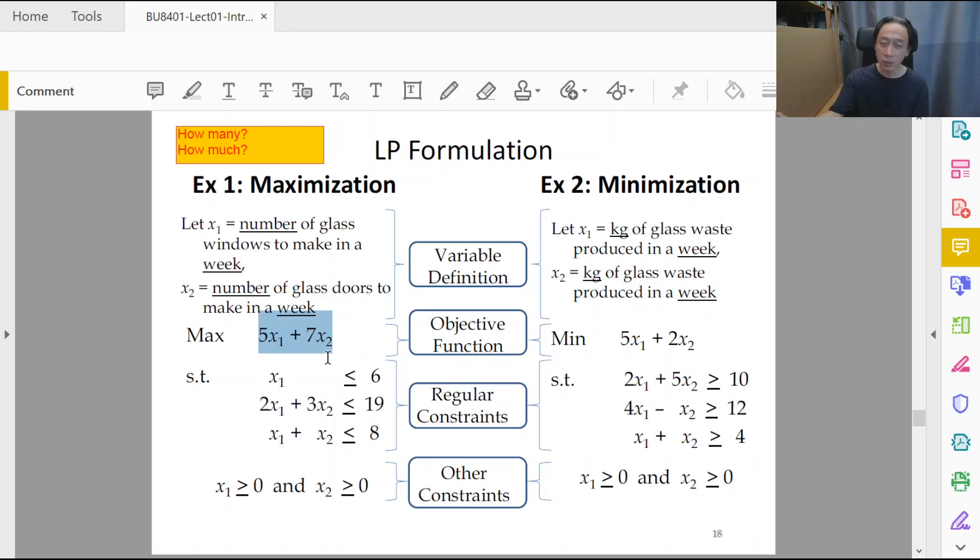We talked about profits here. If one window gives us five dollars profit, then x1 number of windows will give us 5x1 dollars. One door sells for seven dollars profit, x2 number of doors will give us 7x2 dollars of profit.